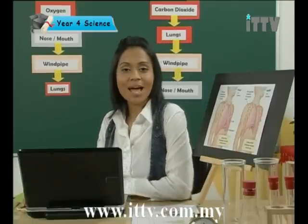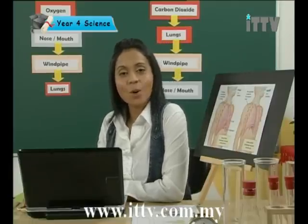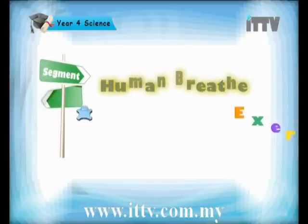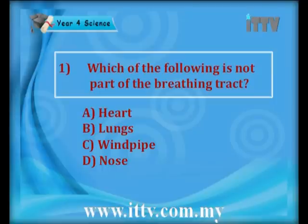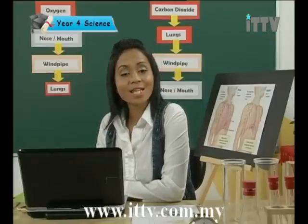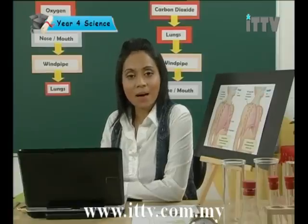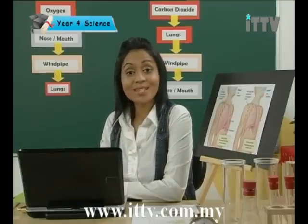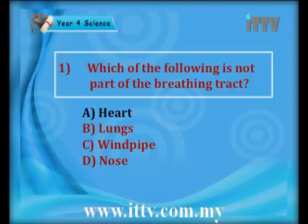Shall we see a few exercises regarding how humans breathe? Question 1: Which of the following is not part of the breathing track? A. Heart, B. Lungs, C. Windpipe, D. Nose. The passage of air goes from your nose and mouth, to the windpipe, to the lungs. So the correct answer is A — Heart. Heart is not part of the breathing track, but is part of the blood circulatory system.